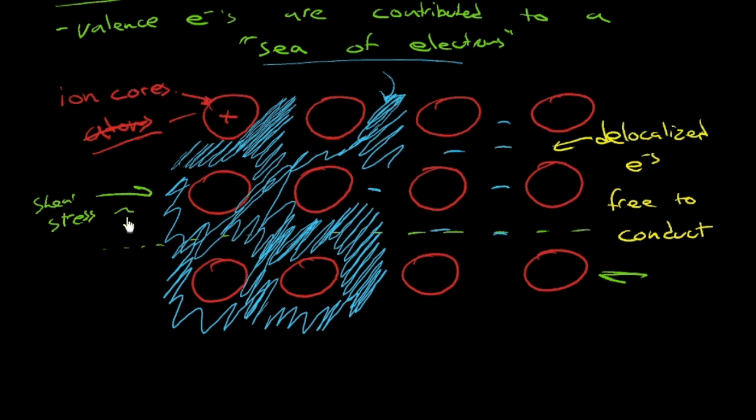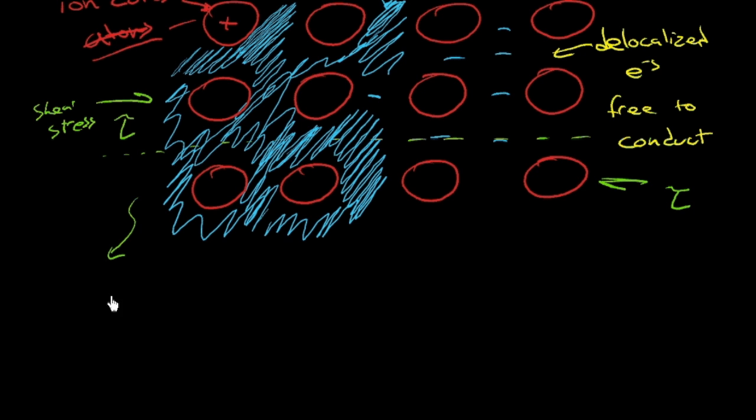You could imagine that we used the tau, the Greek letter tau, for shear stress, that you can move these and slide these atoms past one another without them popping apart. And so that kind of explains that metals are ductile. Well, they can be.